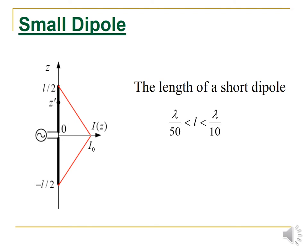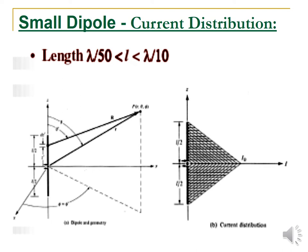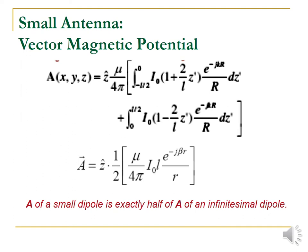Next is the small dipole. The length of the small dipole is given as lambda/50 < L < lambda/20. Taking a small part of the current distribution from the small dipole, the vector magnetic potential can be calculated across the x, y, and z directions. This magnitude is represented as: A vector = z-cap × (1/2) × (mu / 4pi) × I_0 × L × e^(−jβR) / R.